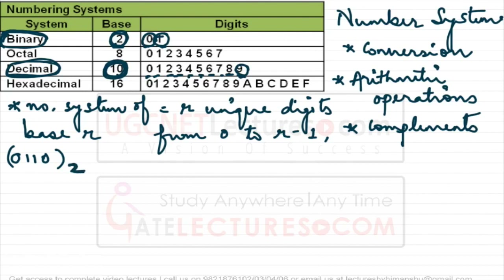We represent the base as a prefix. So if I write 579 with prefix 10, this means it is a decimal number. Similarly, 0110 with a base-2 prefix is a binary number. In binary we have two unique digits.